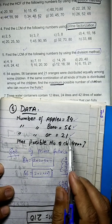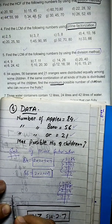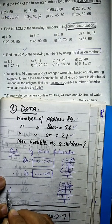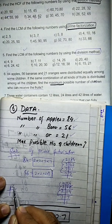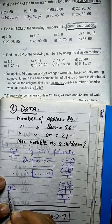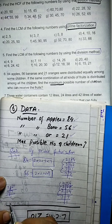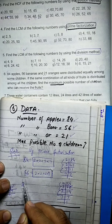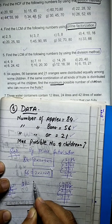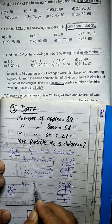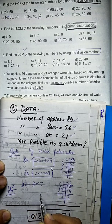Now for 21: 3 multiplied by 7 gives 21, and 7 multiplied by 1 gives 7. So 21 is equal to 3 multiply by 7.